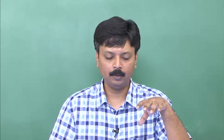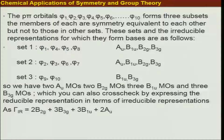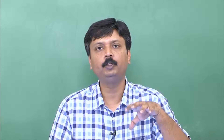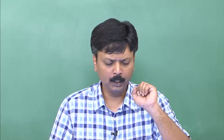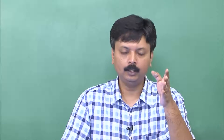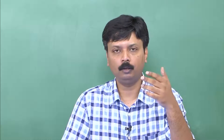Using those 10 pi orbitals we formed a reducible representation, which is gamma. We also said that we can actually separate these pi orbitals into three different sets, because these different carbon atoms form different sets of equivalent carbon atoms. We therefore made set 1, set 2, and set 3, comprising 4, 4, and 2 pi orbitals.